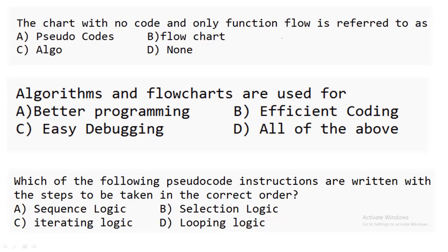The next question: a chart with no code and only function flow is referred to as what? There is no code — only a diagrammatic representation of how the program will flow. This is called a flowchart.